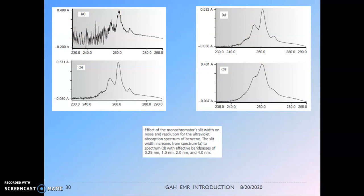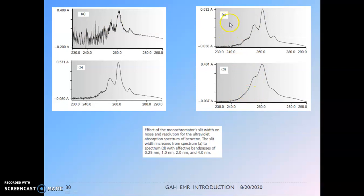Here is a representation showing the effect of monochromator slit width on noise and resolution of the ultraviolet absorption spectrum of benzene. The slit width increases from spectrum A to spectrum D. Spectrum A has an effective bandpass of 0.25 nm, B has 1 nm, C has 2 nm, and D has 4 nm. At 0.25 nm bandpass there is a lot of disturbance, whereas 2 nm appears to be a much better effective bandpass for this particular sample, showing much more detail.